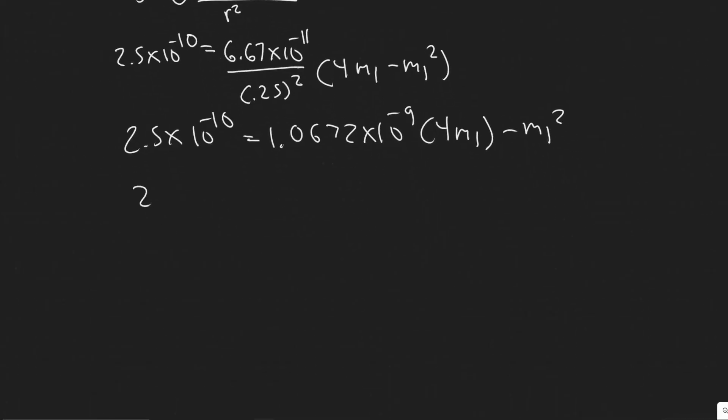Plugging it in now. So I'm going to simplify it a bit more. So 6.67 times 10 to the minus 11 dividing that by 0.25 squared, you get 1.0672 times 10 to the minus 9. And then you multiply that by 4m1 minus m1 squared.